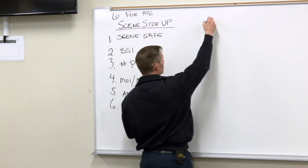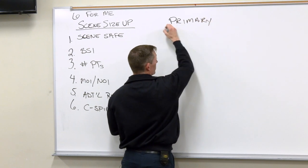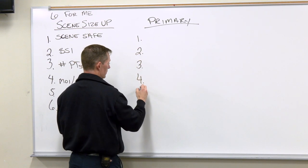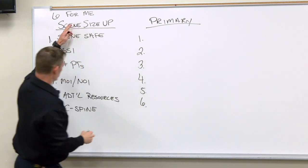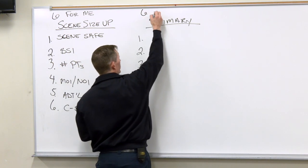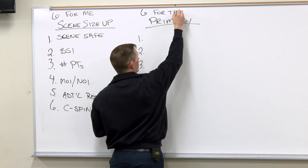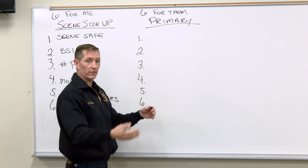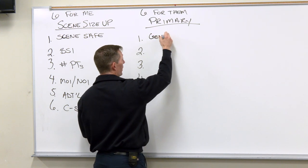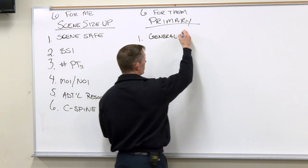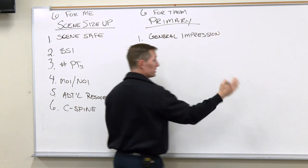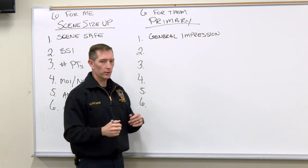The scene size-up progresses into the primary assessment, which also conveniently has six points. If the scene size-up was the six things for me — the things I need to run the call — these are the six things for the patient: the six things they need to sustain life. Number one, as I approach my patient, I form my general impression. What I do here is simply paint a picture to myself of what my patient has going on.